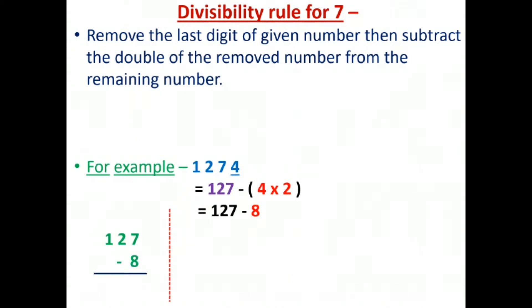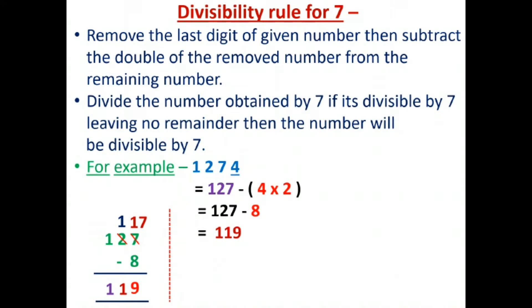To subtract 8 from 127: 8 will not subtract from 7, so 7 borrows from 2, making it 17 minus 8 equals 9, the 2 becomes 1, giving us 119. The next step is to divide the number obtained by 7. If it is divisible by 7 with no remainder, then the original number is divisible by 7. Now we divide 119 by 7.